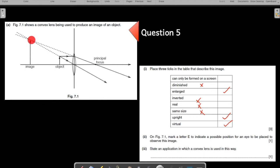Both at the same side of the principal axis. Is the image virtual? Yes, it is virtual. I already explained because you see some imaginary construction with the dotted lines to find the image. On this figure, now I'm on the second part, on this figure mark a letter E to indicate a possible position for an eye to be placed to observe this image. Now I would come at a location, you place your eye something like this.